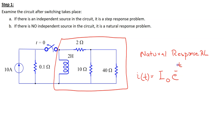The current through the inductor has this form, where the time constant tau is L over R. The next step is therefore to solve for the two parameters that make up the natural response, that is I0 and tau.